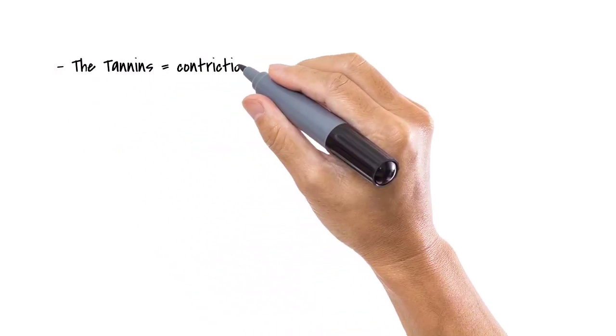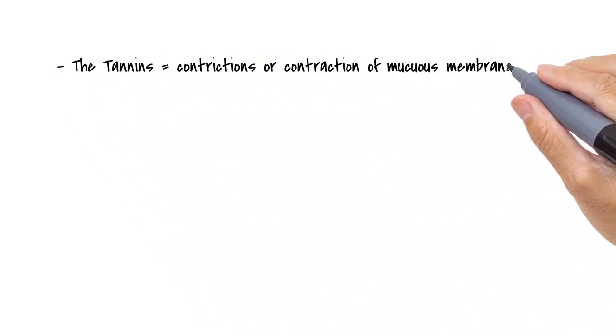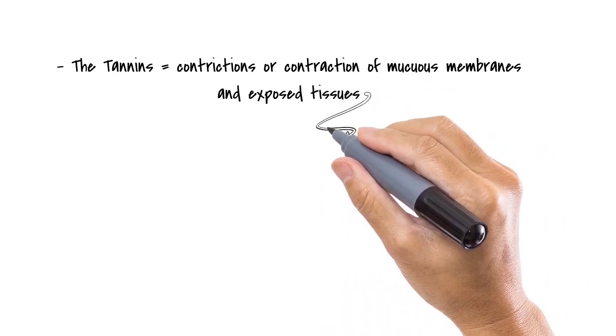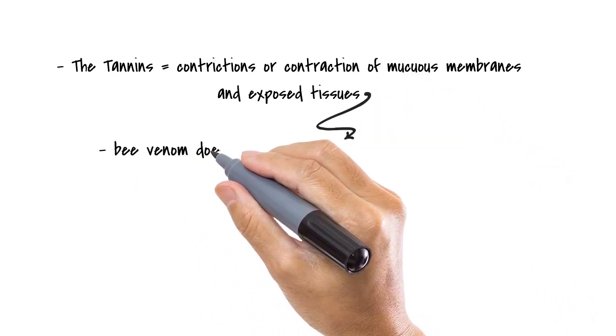These tannins cause constriction of mucous membranes and exposed tissues. This helps prevent the bee venom from seeping into our tissues.